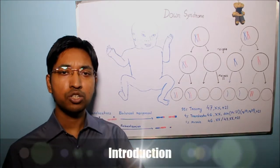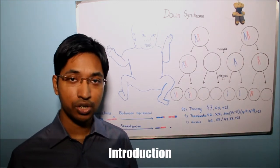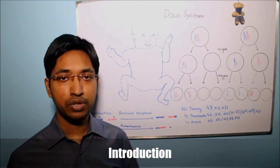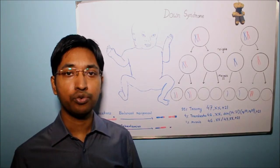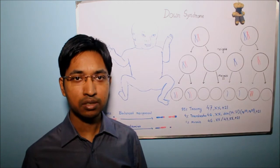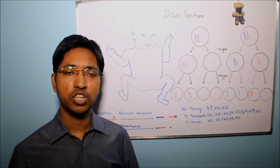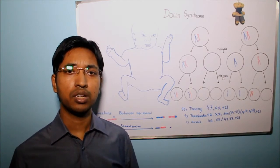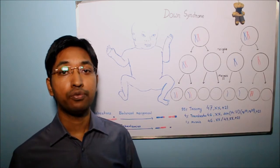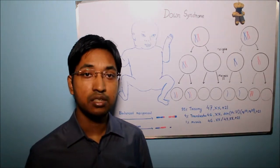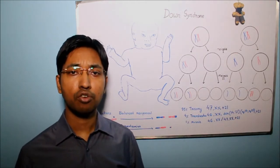First question: what do we mean by Down syndrome? Always remember, Down syndrome is a genetic disorder that occurs when an individual has an extra complete or partial copy of chromosome 21. It is the most common chromosomal disorder that we know of, and it is a major cause of mental retardation or intellectual disability.